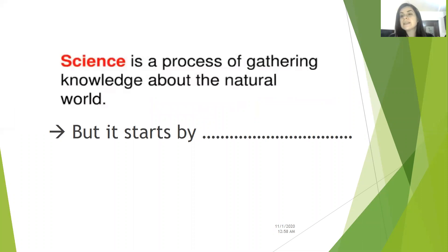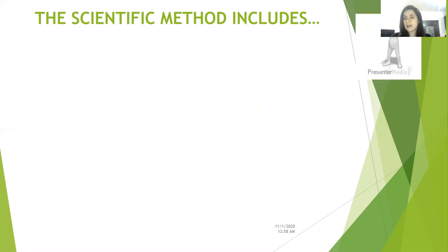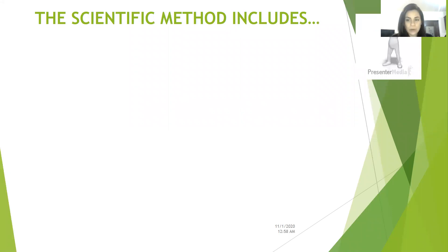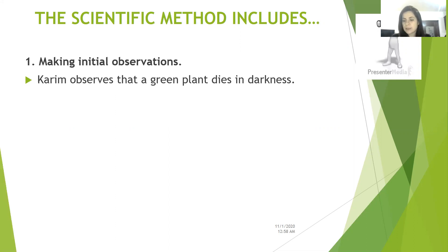But it starts by what? All scientific methods start by initial observations. Let's take an example: Karim observes that a green plant dies in darkness.